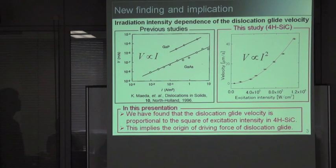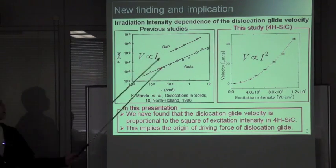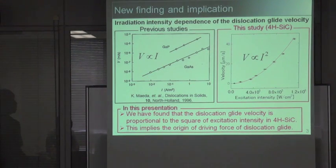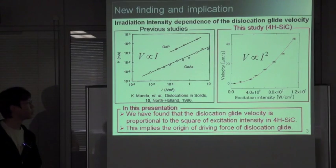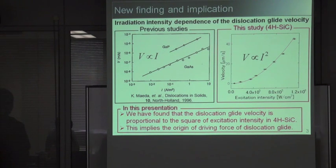According to previous studies on gallium phosphide and gallium arsenide, RADG is characterized by the almost linear dependence of the dislocation glide velocity on the excitation intensities. In contrast, in the present study of 4H silicon carbide, we found, as I will show you later, the dislocation glide velocity is quite nonlinearly dependent on excitation intensity. In order to understand these particular results, I'm going to propose the contributions of the excitation-intensity-dependent driving force for Shockley stacking fault expansions in 4H silicon carbide, and discuss the origin of the driving force of the dislocation glide.